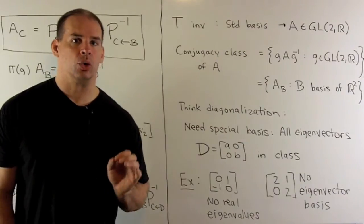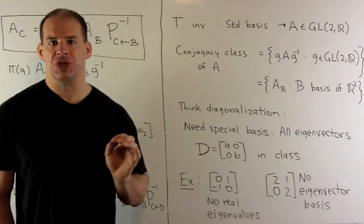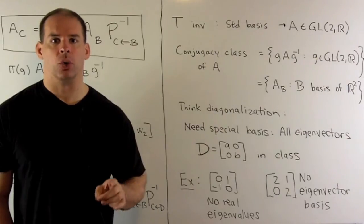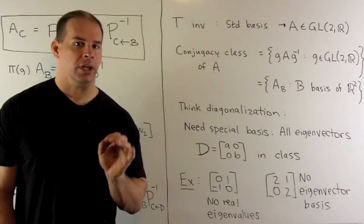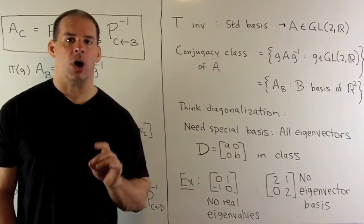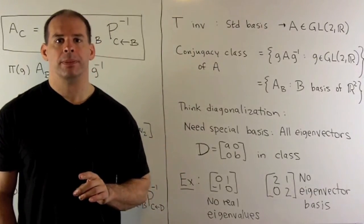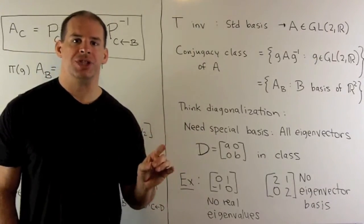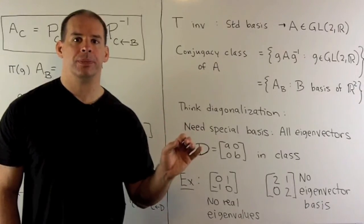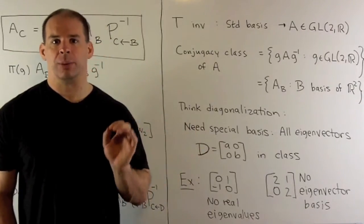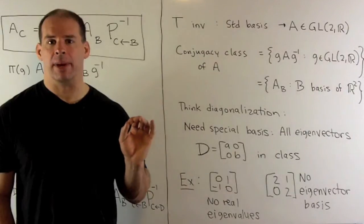With our second group action, we can consider conjugacy classes for elements in our group. Start with a linear transformation T from R² to R². We'll assume it's invertible. That way, our A matrices are always in our group.